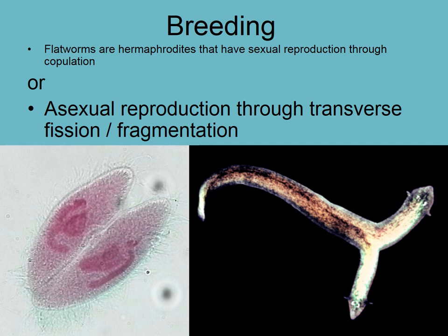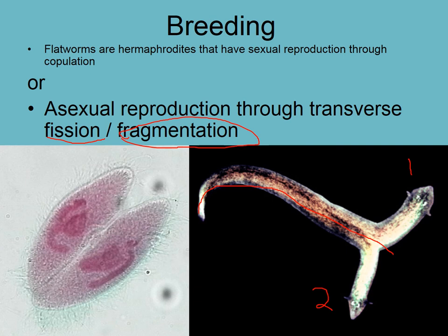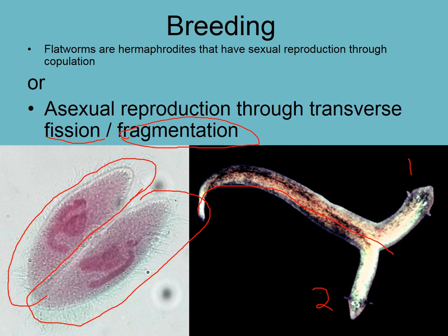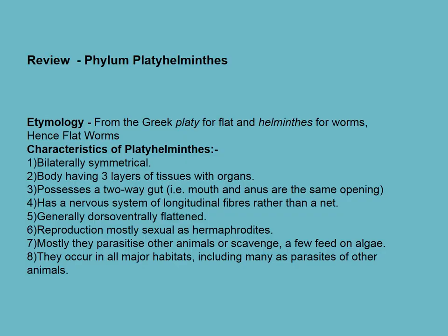Another way they can breed is asexually. What happens is called transverse fission — fission means splitting in two. Or fragmentation: a little chunk comes off and grows into a new individual. These organisms can actually split right down the middle, grow two heads, and keep splitting — both organisms crawl away and survive. Interestingly, we also see this in starfish, and at the cellular level in a paramecium splitting in two, and even in your own cells when they divide and reproduce.